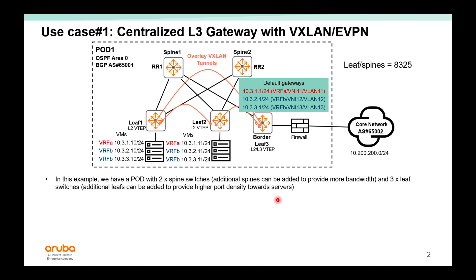In this video, we will review the use cases supported in AOS-CX 10.3. The first use case is use case number one: Centralized Layer 3 Gateway with EVPN. In this example, we have a data center pod with two spine switches.